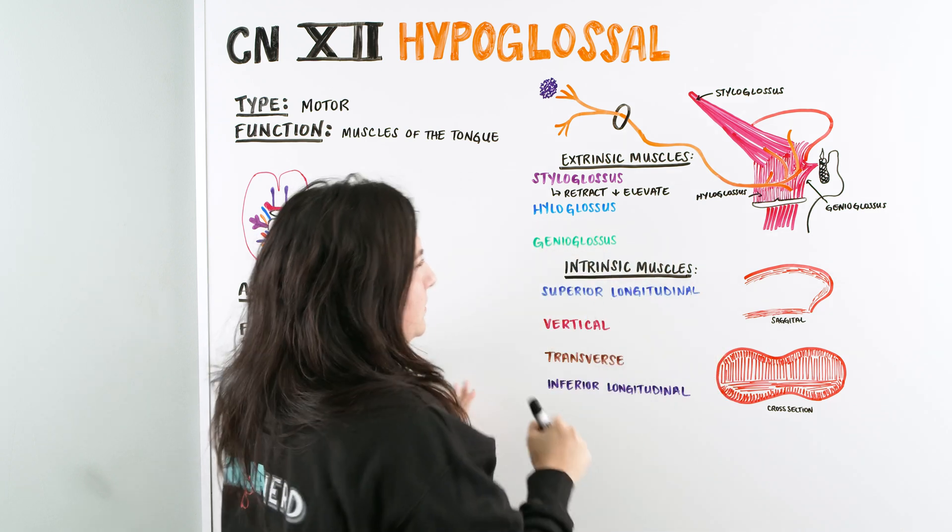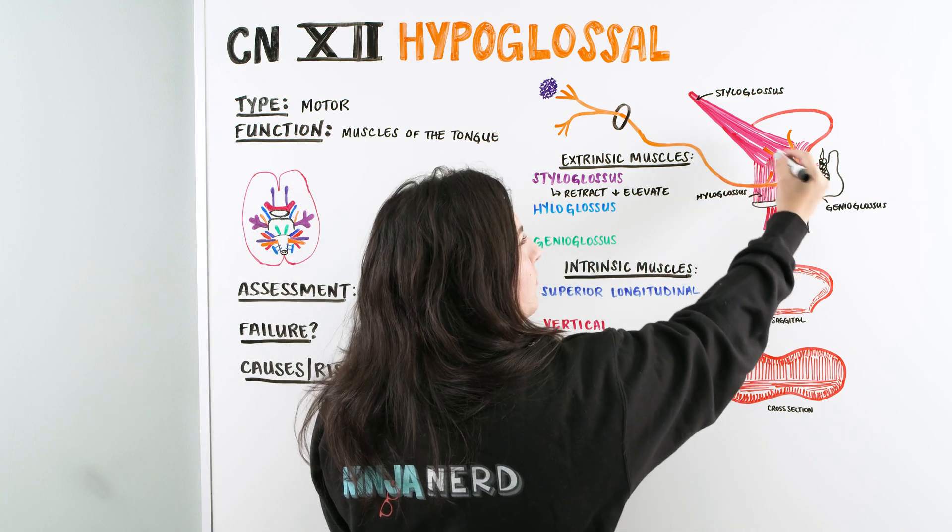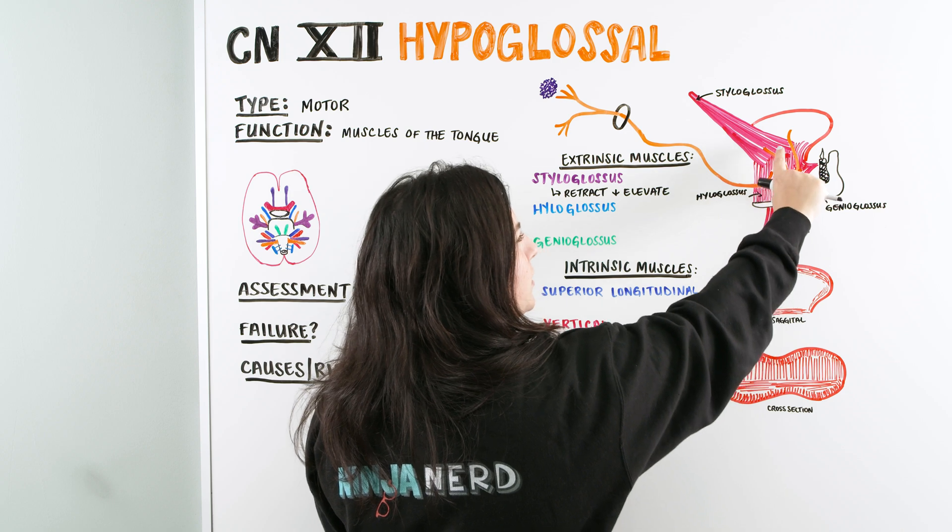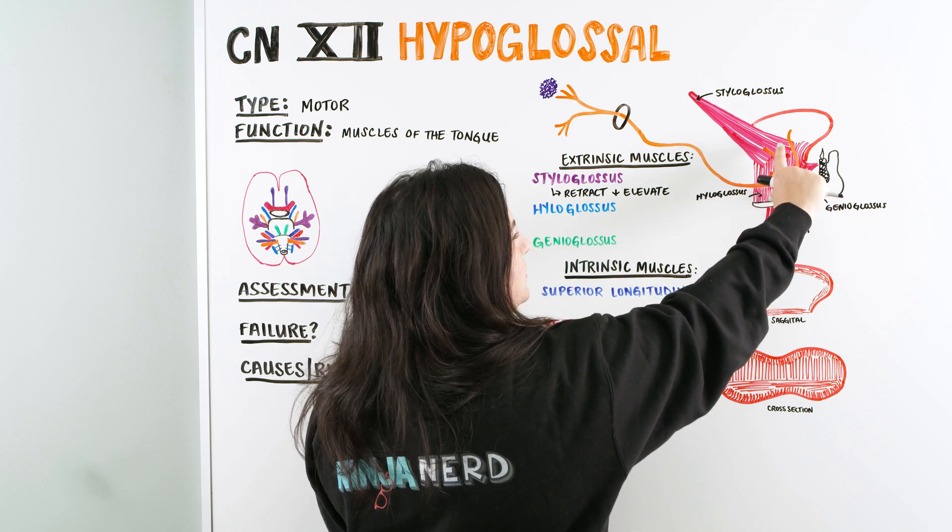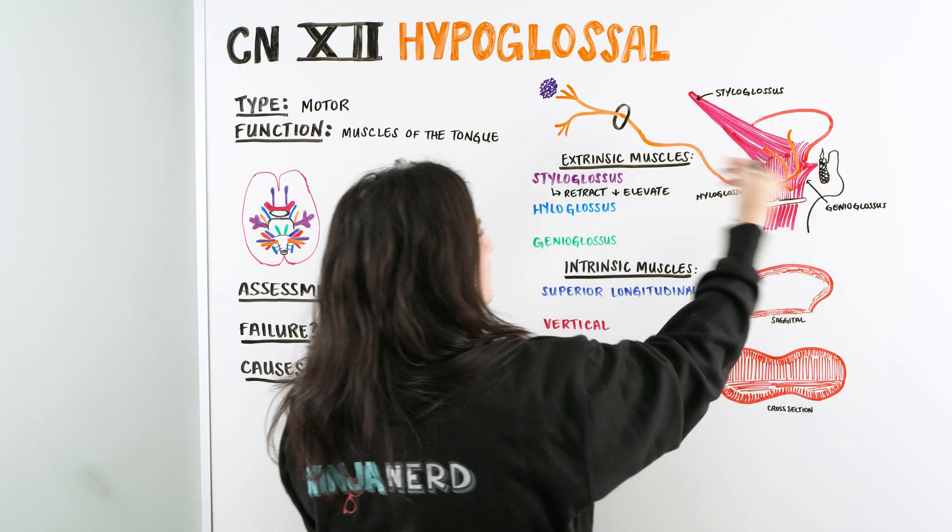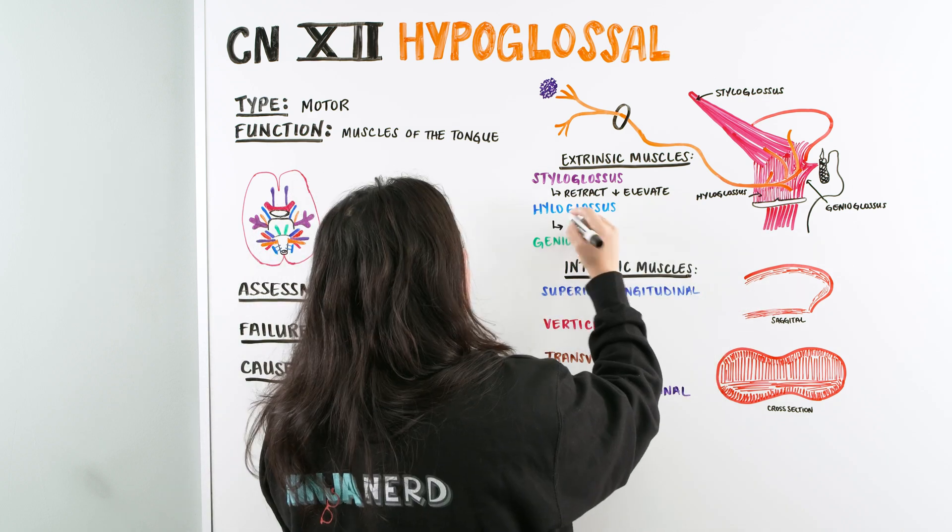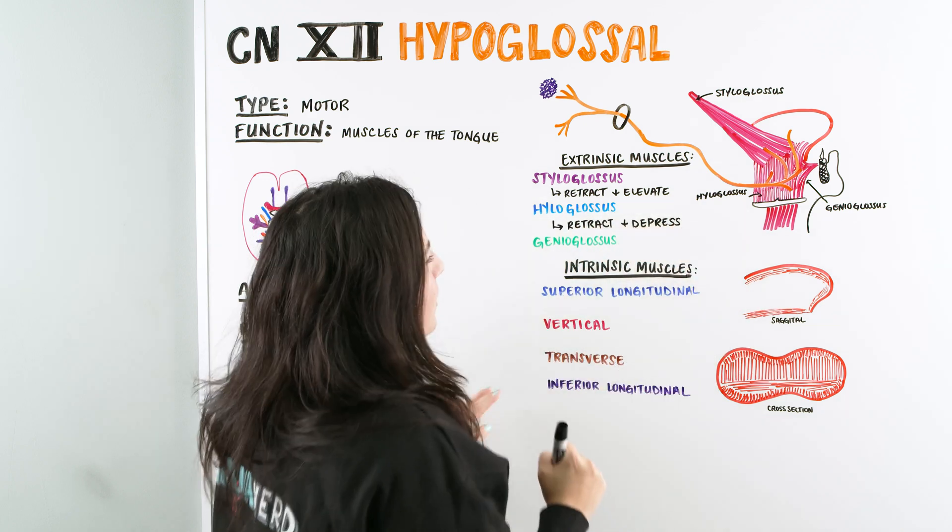And then we have the hyloglossus. That's this one underneath here, right? We can see it's underneath the tongue. If this muscle were to contract, it's going to depress, and it's also going to retract a little bit. So it's going to pull the tongue back and down.